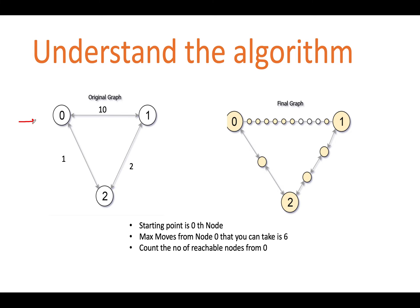In this question, we are given an undirected weighted graph, and the weight signifies the number of new intermediary nodes that need to be formed from the source index to the destination index. For example, if the weight is given as 10, that means we need to form 10 more intermediary nodes in between. Similarly, between 0 and 2 you need to add one more node, and from 2 to 1 you need to add two more nodes. We need to tell how many nodes are reachable from the 0th index in this graph.